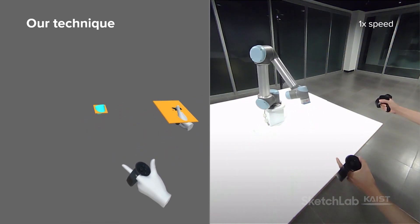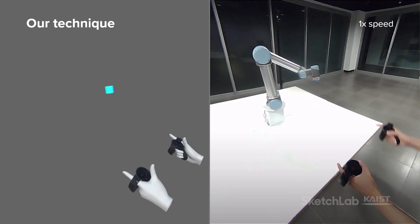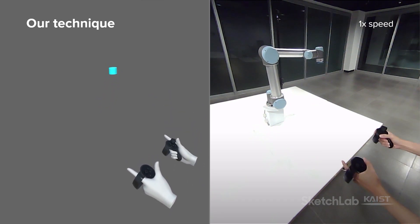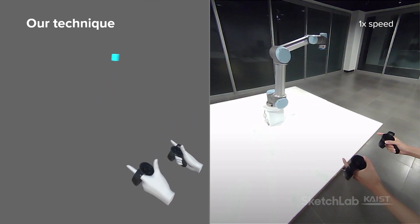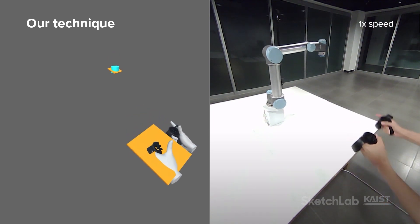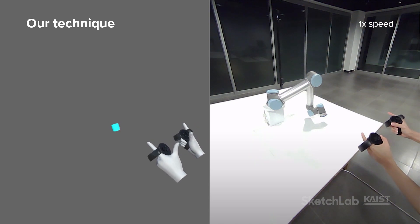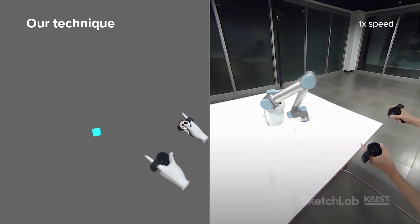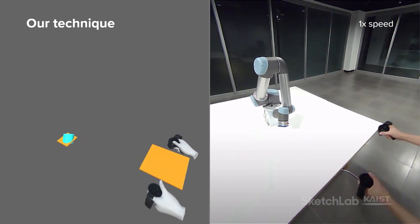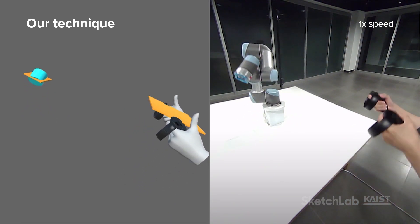Just by activating and deactivating the controller, the user can utilize clutching with one hand, between hands, and with two hands to make larger movements through repetition or to make movements with more comfortable gestures.